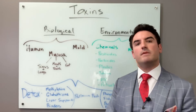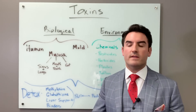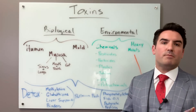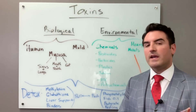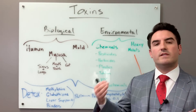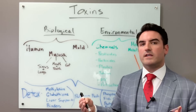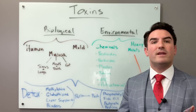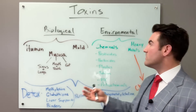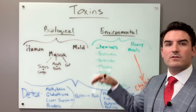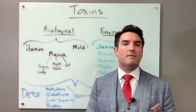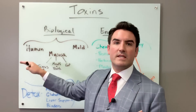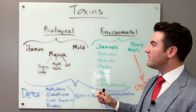Everything your body makes must be destroyed — it doesn't matter what it is. The example I love most is estrogen. Estrogen goes through the same phase one and phase two detoxification pathways — also known as methylation and glutathione — that regular toxins do when we're talking about chemicals, pesticides, and herbicides. So your own human body makes toxins; don't forget about that.